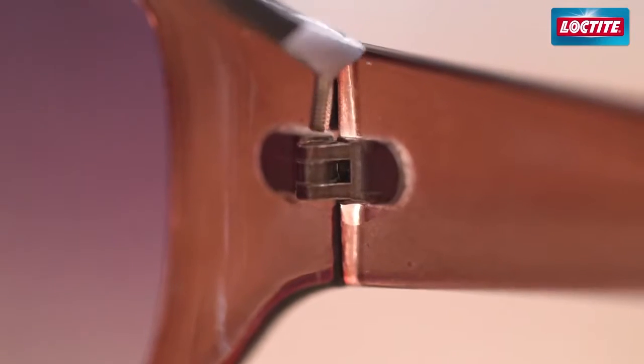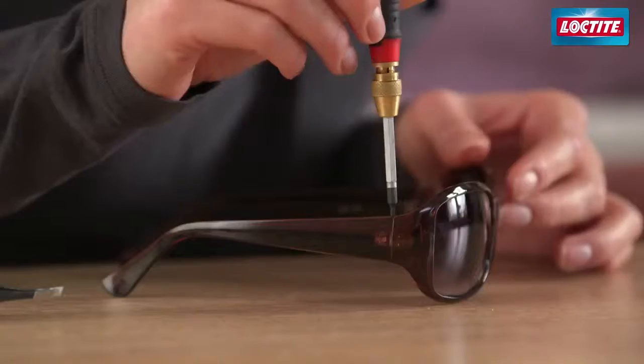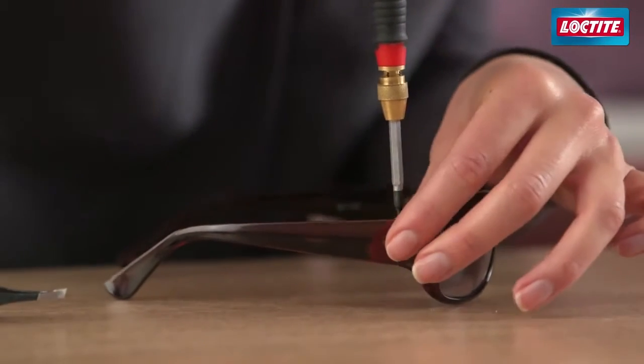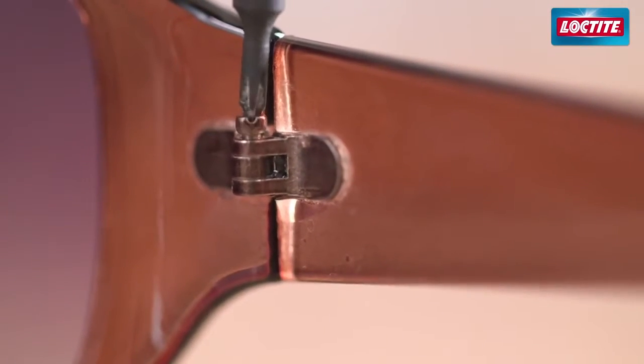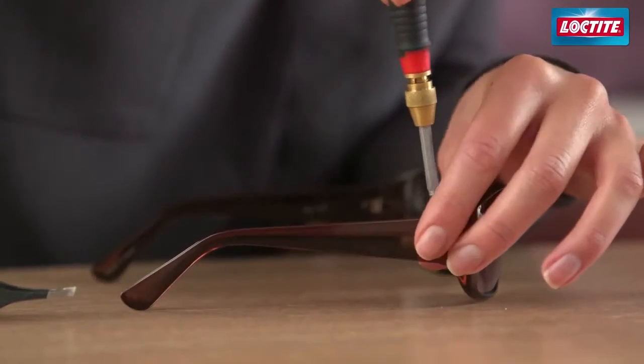Carefully line up the screw on the threads, then screw it in quickly within a few seconds. The glue now acts as a thread locker and will hold the screw in place.